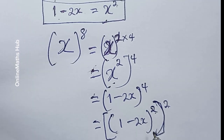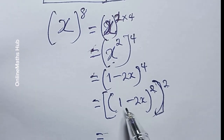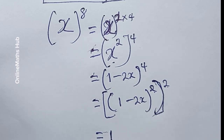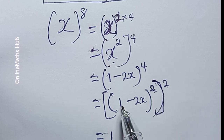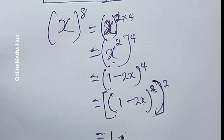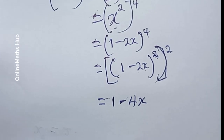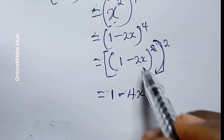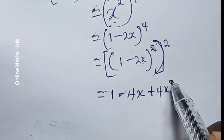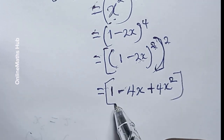So I'm going to simplify the expression inside the bracket using the same expansion rule. I get 1 times 1 which is 1, then 2 times 1 times minus 2x which gives minus 4x, and then minus 2x multiplied by minus 2x which gives plus 4x squared. All of this is still raised to power 2.